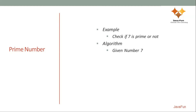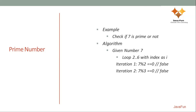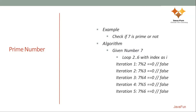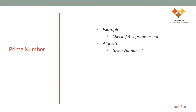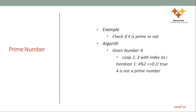For the number 7, the loop runs from 2 to 6. 7 mod 2, 7 mod 3, through 7 mod 6 — none give a remainder of 0, so 7 is confirmed a prime number. For the number 4, the loop runs from 2 to 3, and 4 mod 2 equals 0. So there is a number other than 4 and 1 that equally divides 4, which is why 4 is not a prime number.